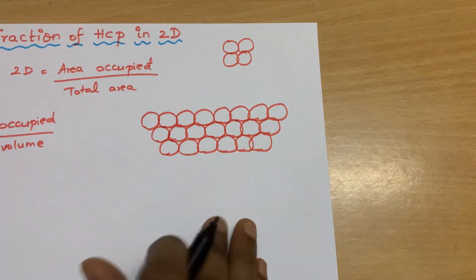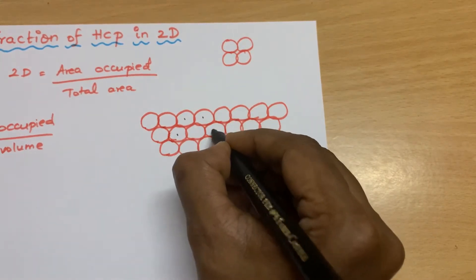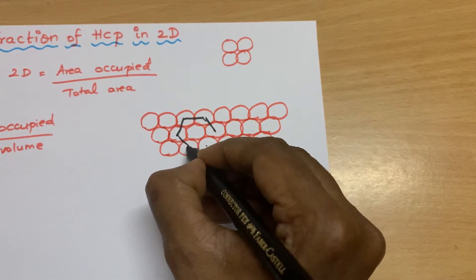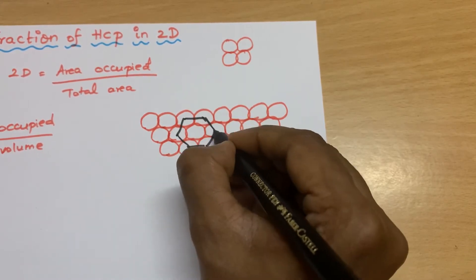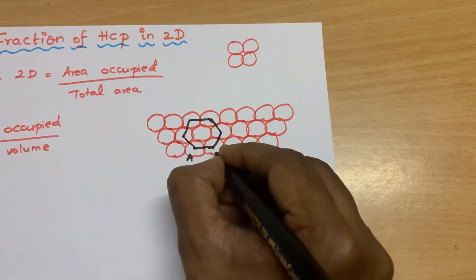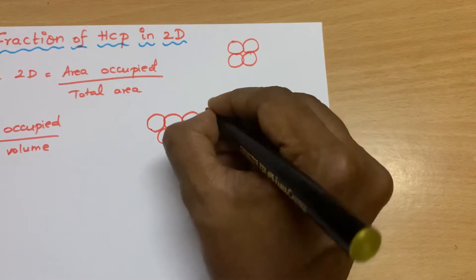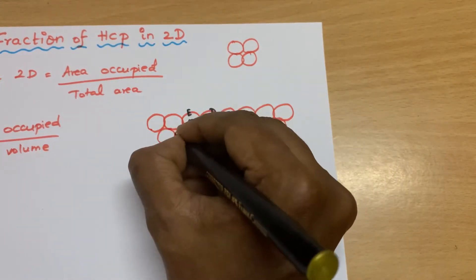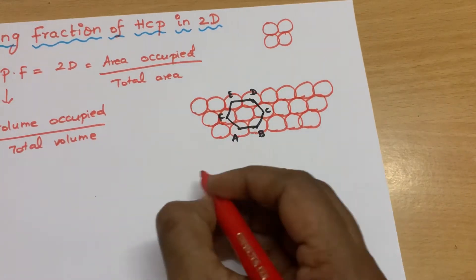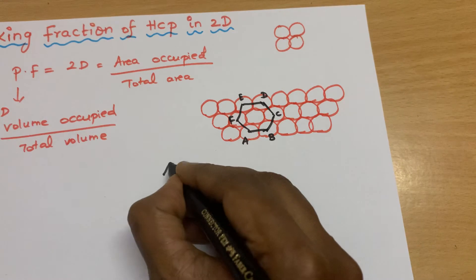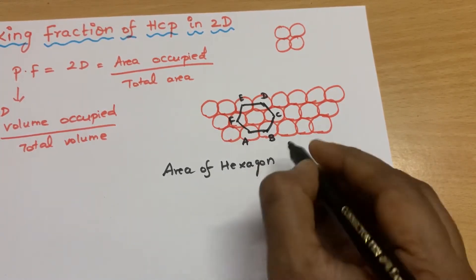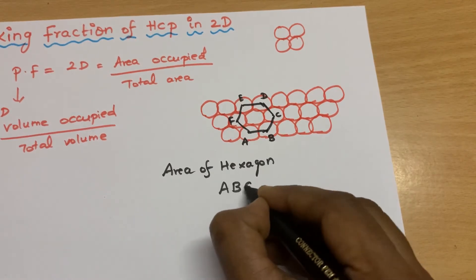Here I am going to take this hexagon, which makes one unit cell. I am going to label it: this is A, this is B, this is C, this is D, this is E, this is F, and one more centre atom is there. So what is the area of this hexagon?